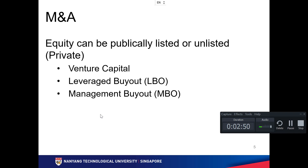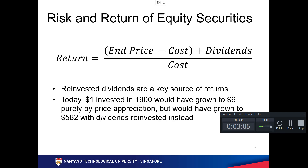Equity can be publicly listed or unlisted. For unlisted, you have venture capital, leveraged buyout, and management buyout — those are for private equity. Mostly we are talking about public equity. The return of equity securities is: end price minus cost, plus dividends, divided by cost. Reinvested dividends are a key source of return — one dollar invested in 1900 would have grown to just six dollars by price appreciation alone, but 582 times if dividends were reinvested.